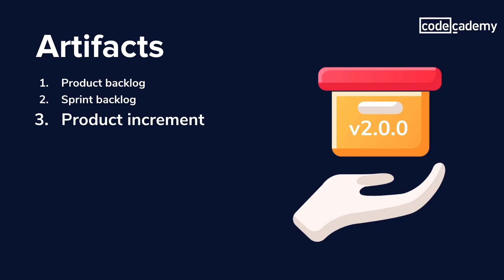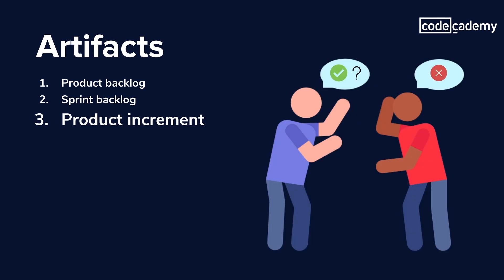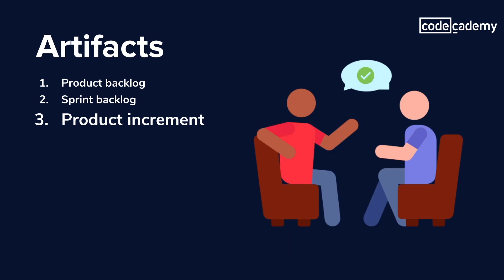The product increment is the next iteration or version that has all the features that were promised by the end of the sprint. The next version of the product must be at a point where it's ready to be delivered to users. This part can be a bit vague since what you perceive as complete may be different from what I perceive as complete. That's why every team member needs to have the same understanding of what state the product needs to be in for it to be considered done for that sprint.